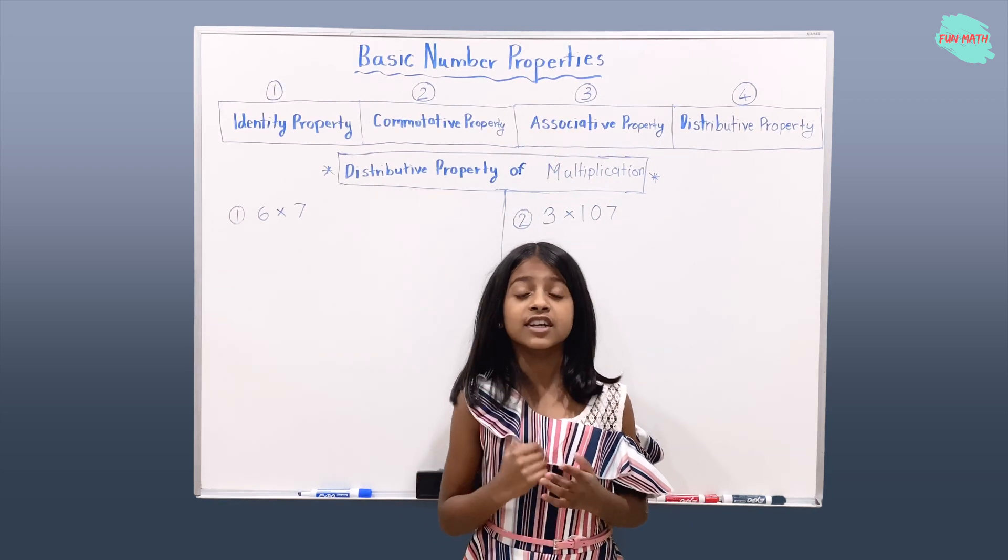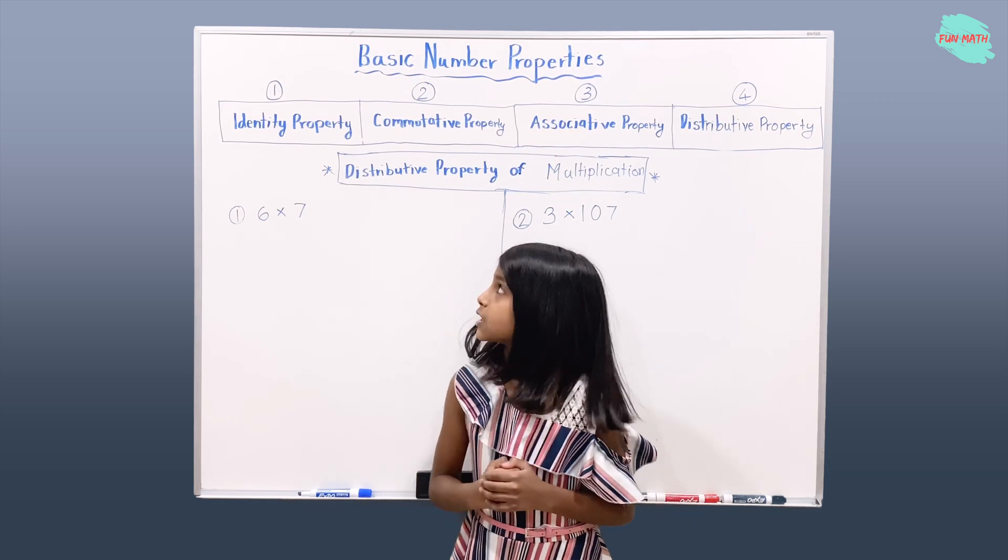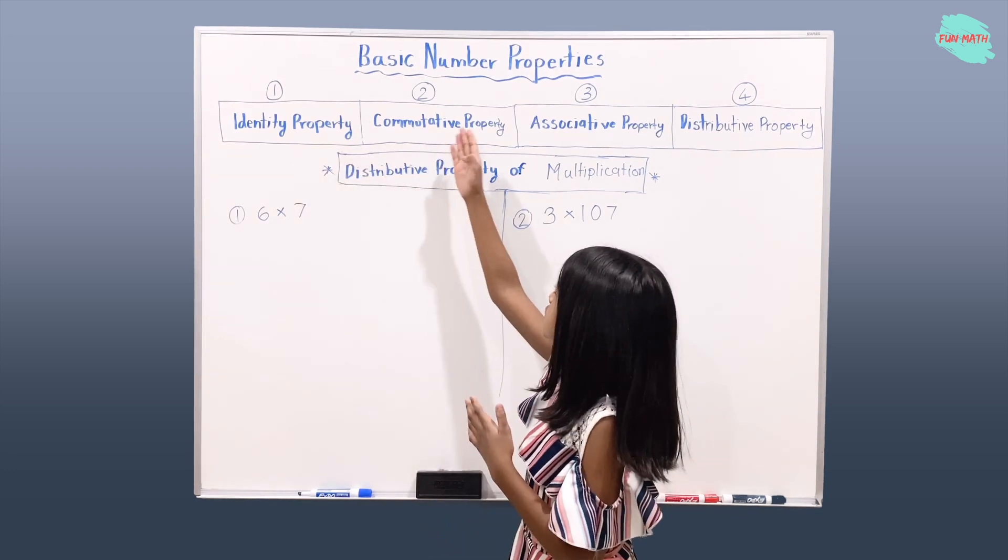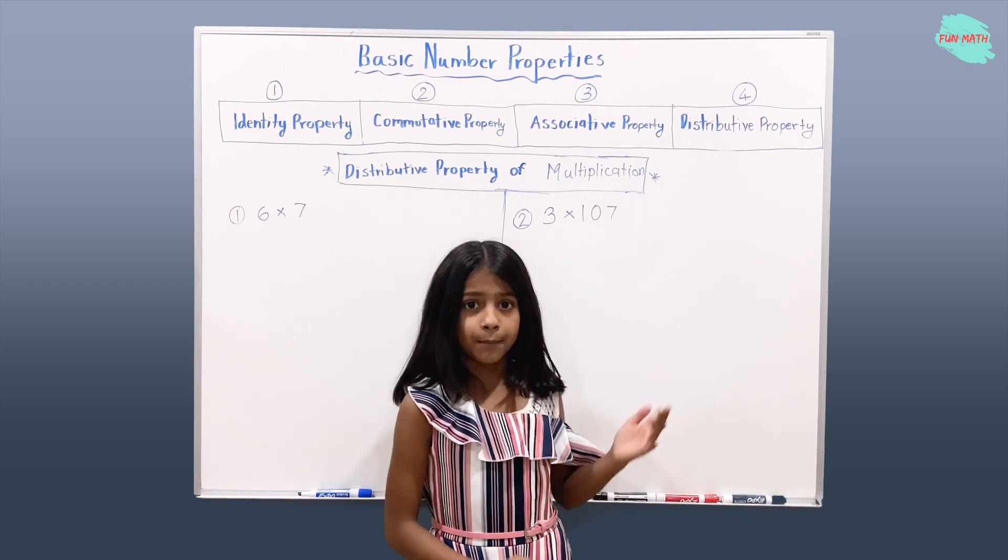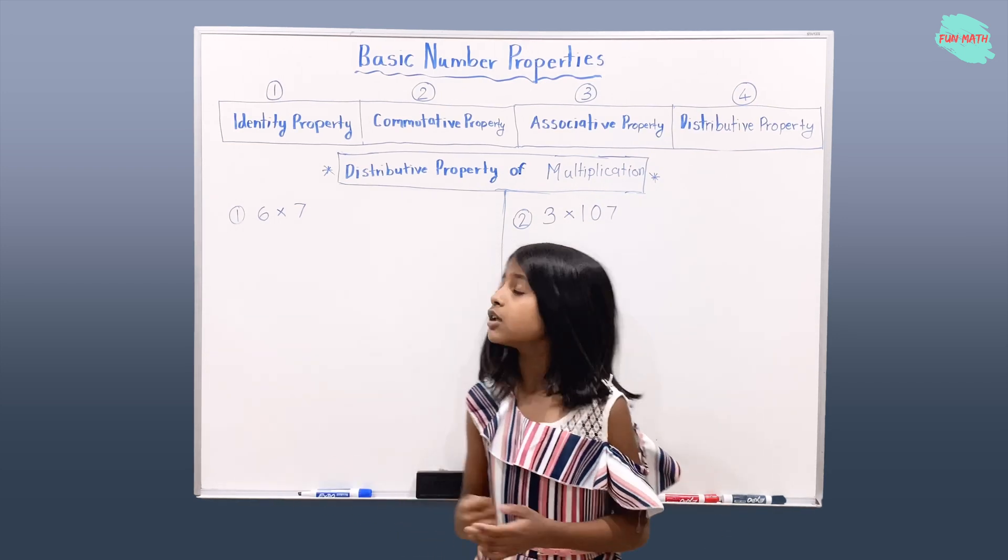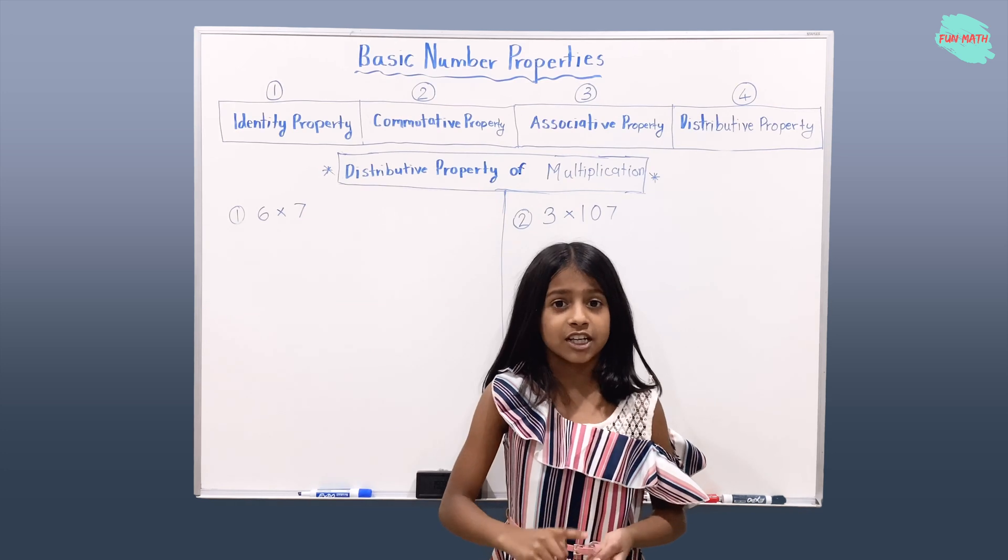Here we have four different types of properties: identity property, commutative property, associative property, and distributive property. And we already talked about the identity property of multiplication and addition.